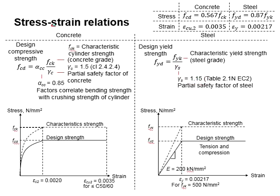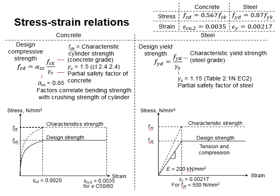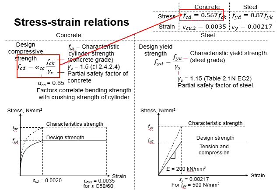For concrete, there is an additional factor which correlates the bending strength with the crushing strength of the cylinders. It is normally taken as 0.85. Substituting the relevant values into the equation, the design compressive strength of concrete is given by 0.567 FCK.